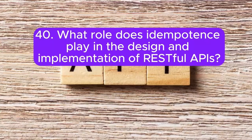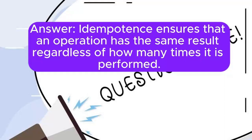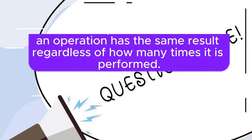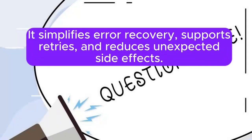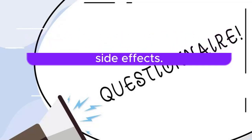Question 40: What role does idempotence play in the design and implementation of RESTful APIs? Idempotence ensures that an operation has the same result regardless of how many times it is performed. It simplifies error recovery, supports retries, and reduces unexpected side effects.